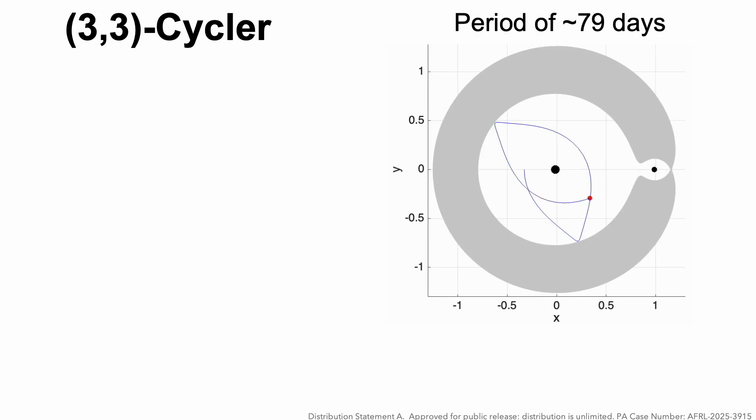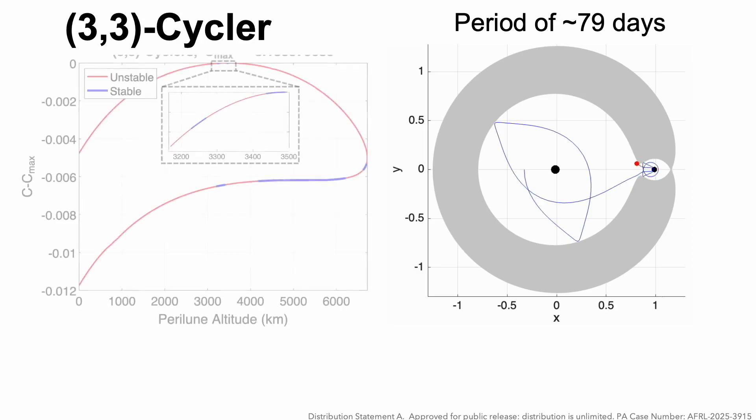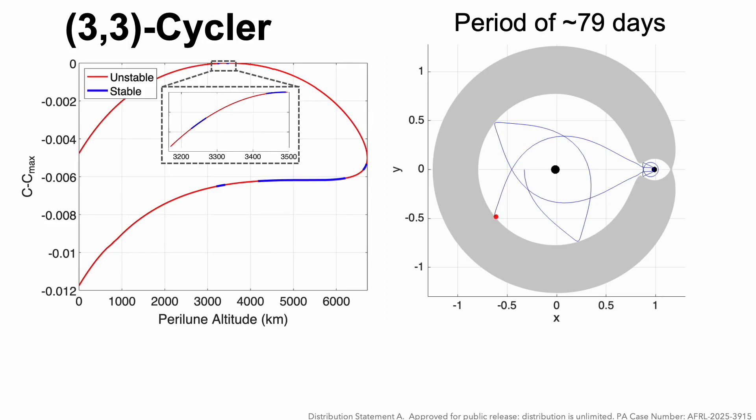Here's the (3,3) cycler again, which has a period of about 79 days. Interestingly, when we map out the entire family, this is Jacobi constant versus perilune altitude, we actually see five stability windows.